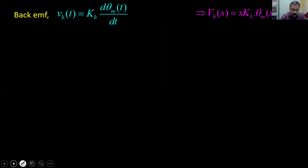The back EMF in a DC motor is proportional to the speed: Vb(t) = Kb · dθm/dt. Taking the Laplace transform: Vb(s) = s · Kb · θm(s).